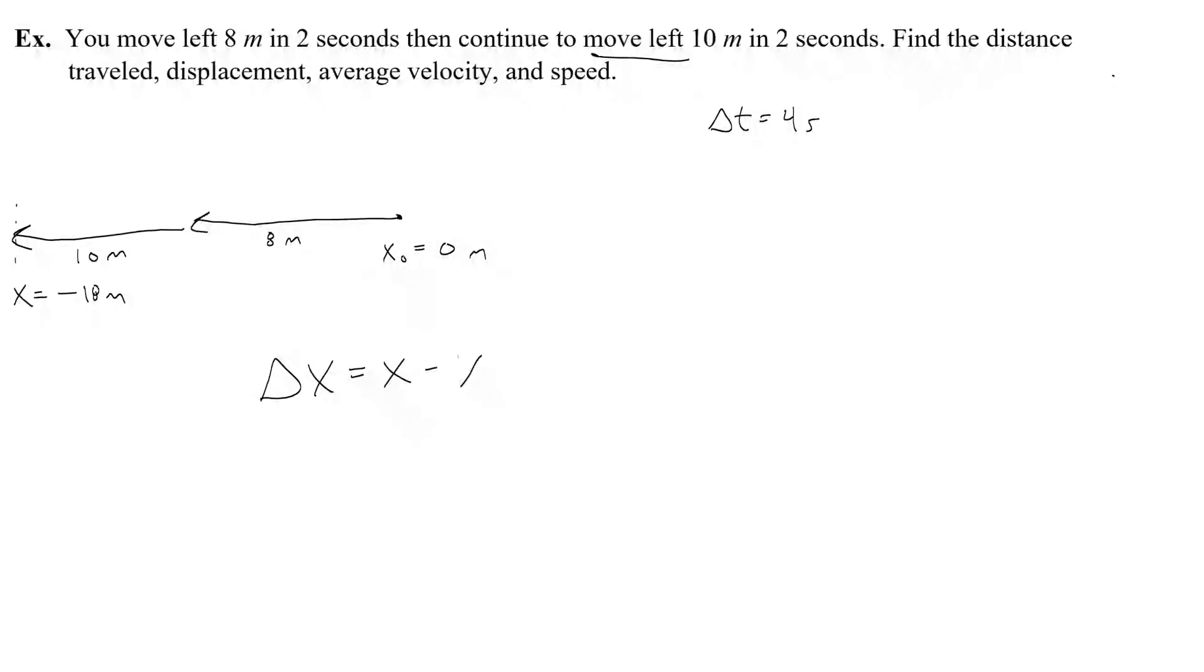So our displacement, x minus x naught, negative 18 meters minus 0, negative 18. Displacement is negative 18 meters, or to the left, 18 meters. But the distance traveled is 8 plus 10, so just 18 meters.